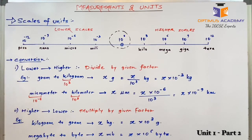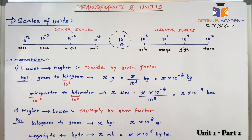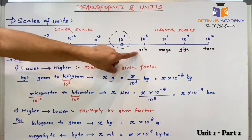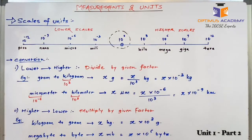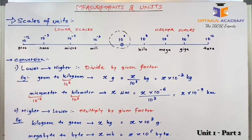You can see the factors written on the right as well as on the left hand side. On the right hand side, we have 10 raised to 3, which is called kilo; 10 raised to 6, which is called mega; 10 raised to 9, giga; and 10 raised to 12, tera.